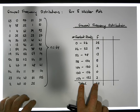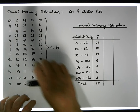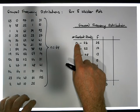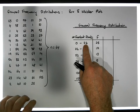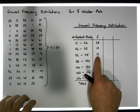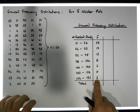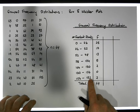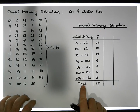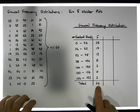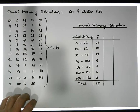This group frequency distribution summarizes our raw data set. We have 25 observations between 0 and 26 (inclusive of 0, not including 26), 17 observations between 26 and 52, 13 between 52 and 78, 5 between 78 and 104, and finally 2 observations between 156 and 182. This gives a total frequency count of 64, matching our sample size.